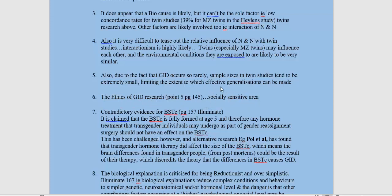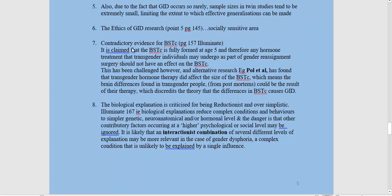GID research is a socially sensitive area — we need to be very careful about confidentiality and protection from harm. People get naturally quite emotional talking about this topic, so we need to be very sensitive to this in any research. There is also contradictory evidence for the BSTC: it's claimed that the BSTC is fully formed by age five and hormone treatment shouldn't affect it, but this has been challenged. Research by Paul et al. found that transgender hormone therapy did affect the size of the BSTC, meaning brain differences found in postmortems could be the result of that therapy, which discredits the theory that BSTC differences cause GID.